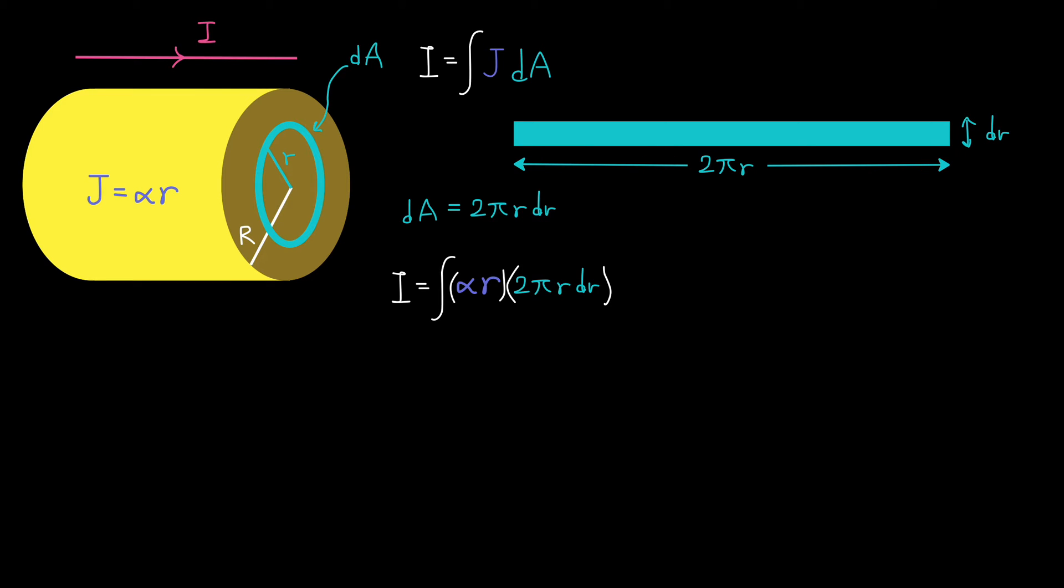Let's rewrite our integral equation. We substitute alpha times r for J and 2 pi r dr for dA. Now we have an integral that we can actually calculate and evaluate. Now that we also have our integration variable, let's set up our lower bound and upper bound. r runs from 0 to capital R, which is the radius of the whole cross-sectional area.